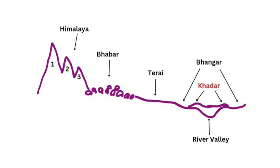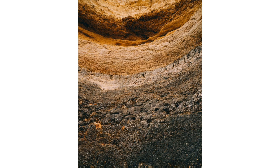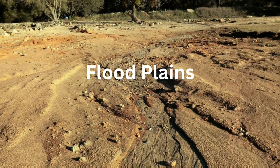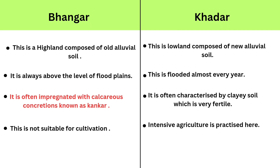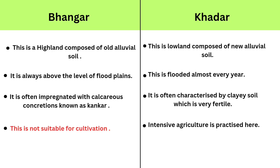Now we are going to learn the difference between Bangar and Khadar. Bangar is an upland composed of old alluvial soil, whereas Khadar is a lowland composed of new alluvial soil. Bangar is always above the level of flood plains, while Khadar is flooded almost every year. Bangar is often impregnated with calcareous concretions known as Kankar and is not suitable for cultivation. Khadar is characterized by clayey soil which is very fertile, and intensive agriculture is practiced here.